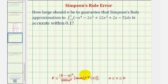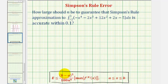To answer this question, we'll be using the error bounds formula for Simpson's rule, where the error is less than or equal to the quantity (b minus a) raised to the fifth power, divided by 180 n to the fourth, times the absolute value of the maximum function value of the fourth derivative on the closed interval from a to b. There are two steps: find the maximum function value, then solve the inequality for n.